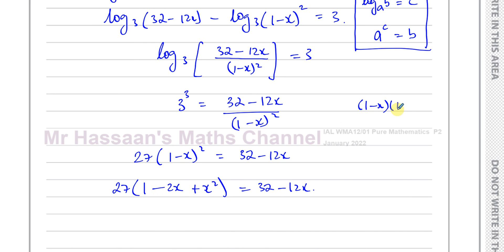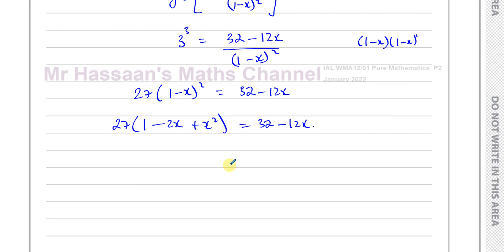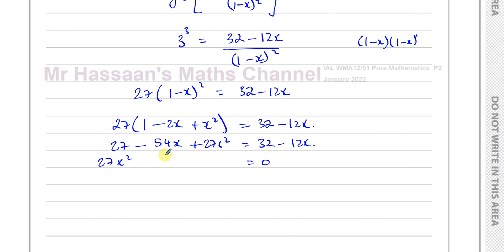Don't make the mistake of saying this is 1 plus x squared or 1 minus x squared — you have the middle term. Remember it's 1 minus x multiplied by 1 minus x: you get 1 minus 2x plus x squared. You square the first term, multiply them together to get minus x, double it for the middle term to get minus 2x, and squaring the negative last term gives positive x squared. So expanding, I have 27 minus 54x plus 27x squared equals 32 minus 12x. I can see I have a quadratic equation, and I'm going to make it equal to 0: 27x squared minus 42x minus 5 equals 0.